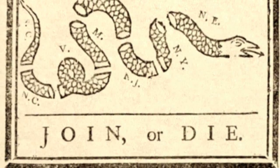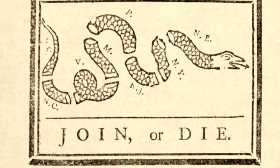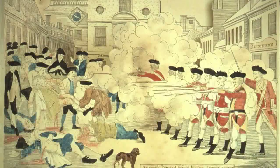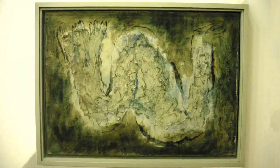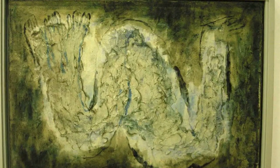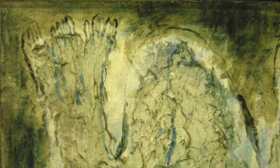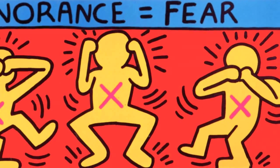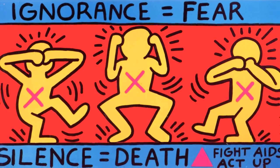In 1754, as a call to unify the American colonies, Benjamin Franklin published a print that helped shift how the colonies viewed themselves, which ultimately led to the American Revolution. During World War II, a series of paintings entitled Les Otages were created to symbolize the screams of Jews during the Holocaust. In the late 80s, Keith Haring created works to raise awareness for AIDS, a disease he died of in 1990.